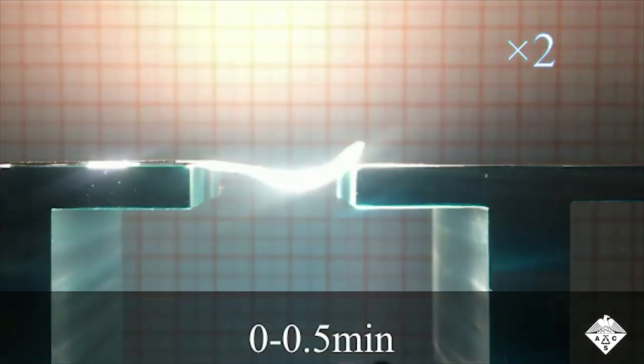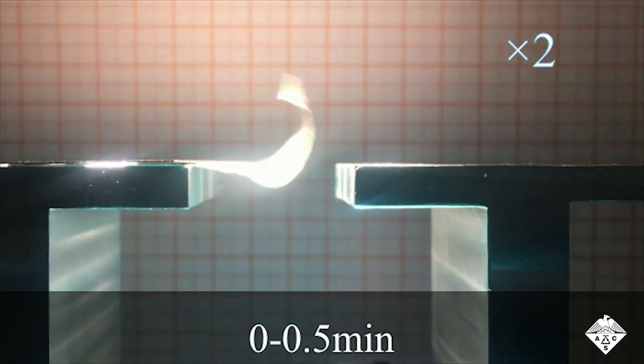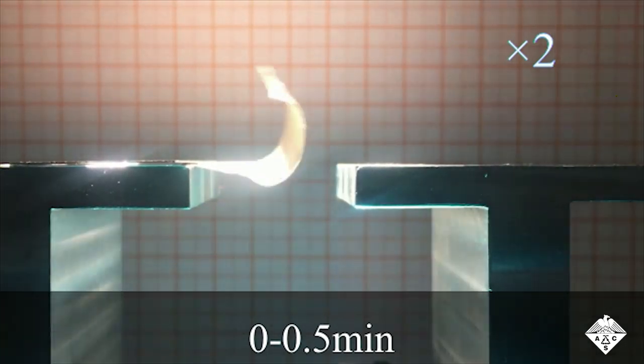When the team fixed one end of the artificial wing to a support and shone simulated sunlight onto it, the temperature of the strip increased. The polymer layer on the bottom expanded more from the heat than the metal layer on the top, causing the wing to curl.